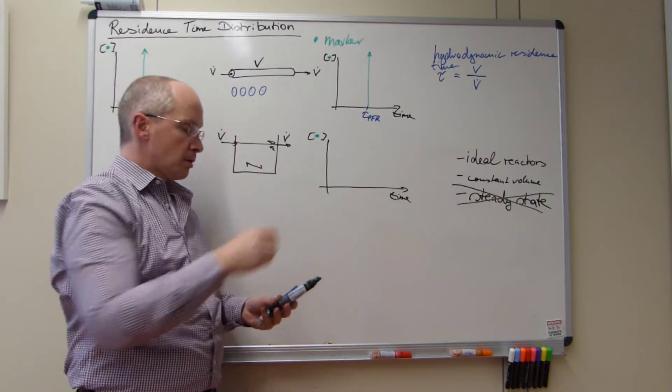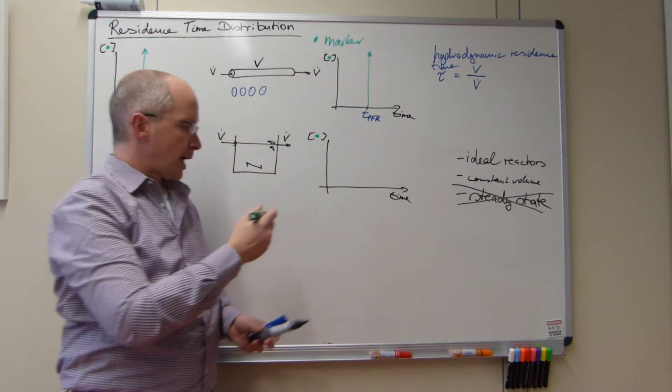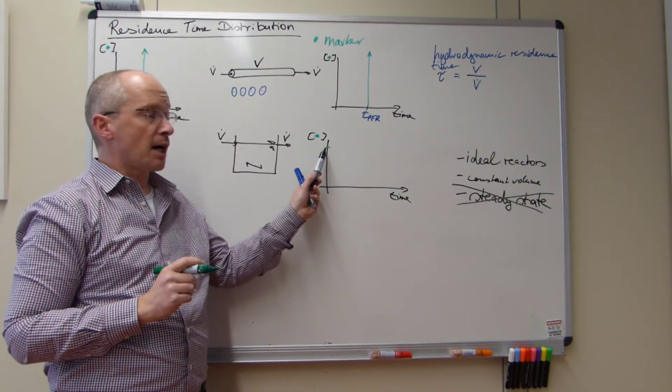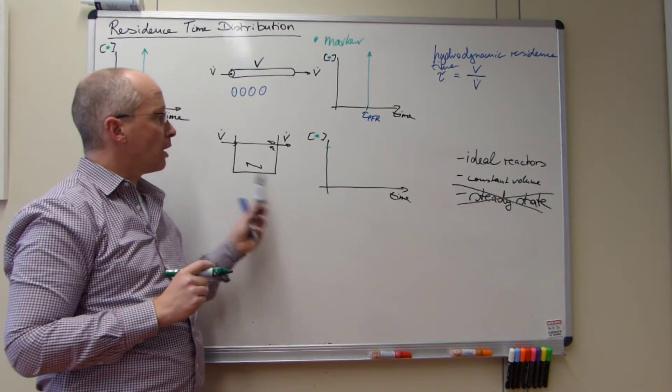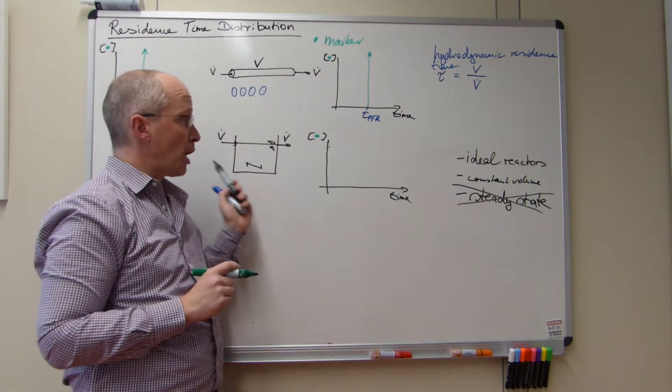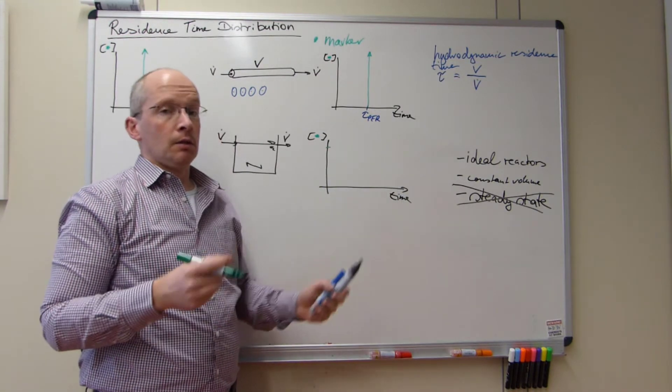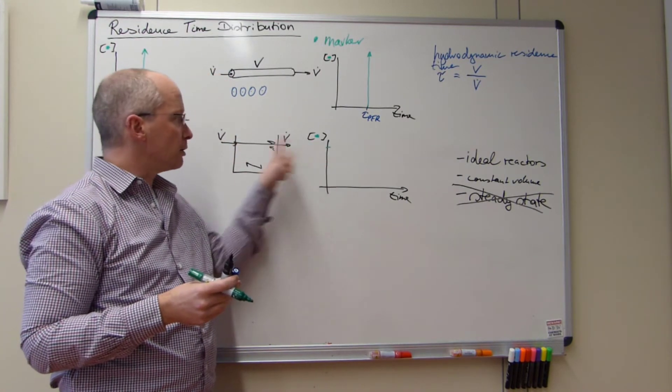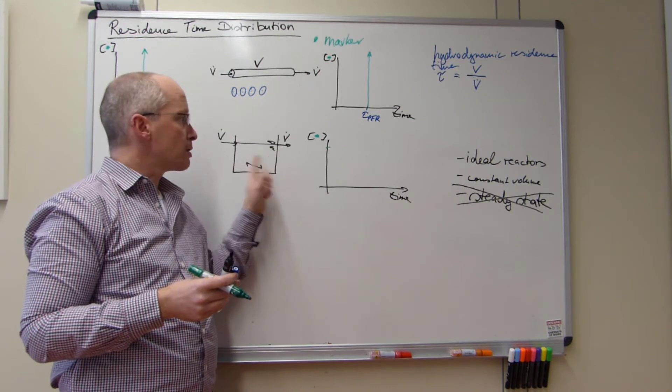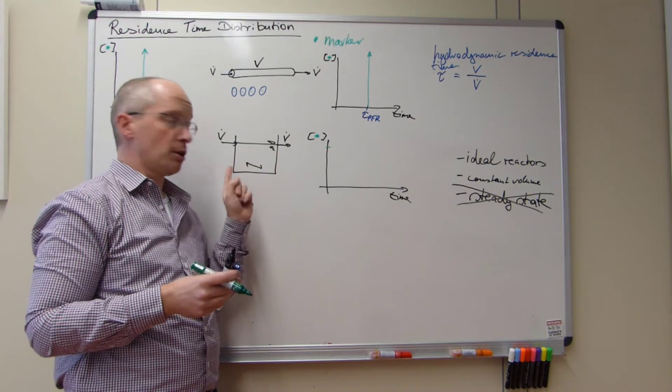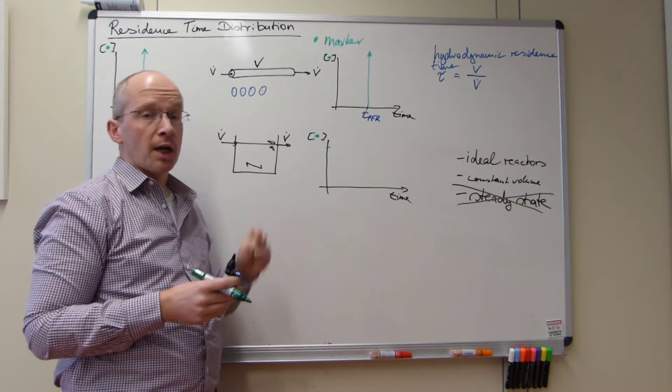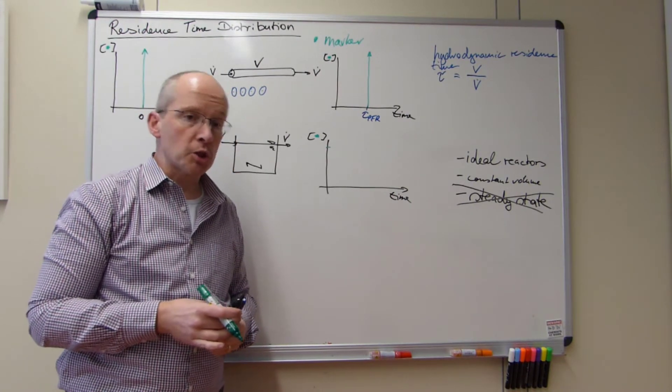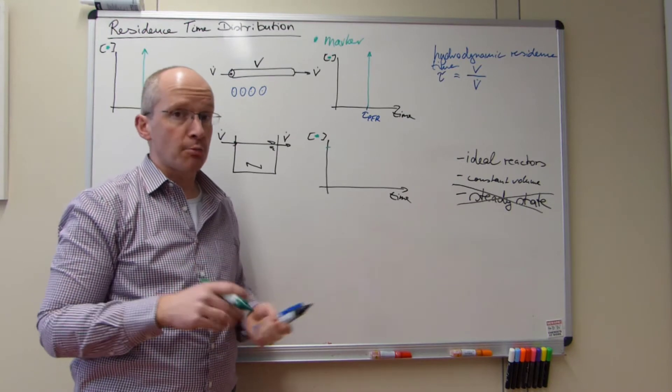We will put everything in, so we will get a response here which is at its highest here. It will be zero after the time it takes it to wash out. As the likelihood of the green marker leaving the reactor is proportional to its concentration in the reactor, we have something which will follow a first order decay, which we know is an exponential function.